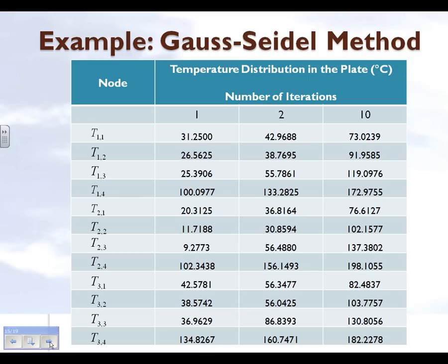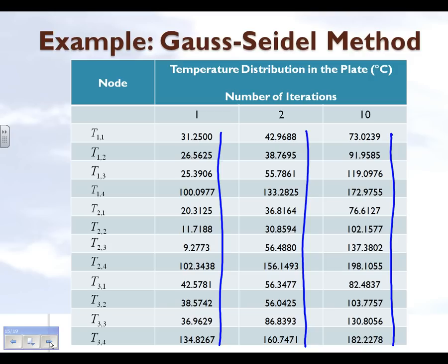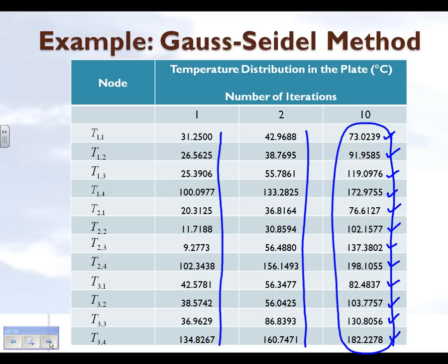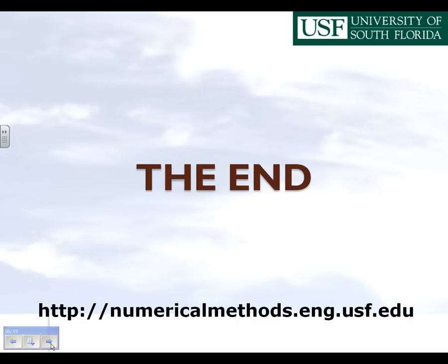We have summarized the temperatures from the first iteration, the second iteration, and the results at the end of the tenth iteration. The results at the end of the tenth iteration are within one percent of the pre-specified tolerance — comparing all twelve nodes with their values from the ninth iteration, the absolute relative approximate error for all twelve nodes was less than one percent. So if one percent pre-specified tolerance is acceptable, we can accept the tenth iteration results as the steady-state temperature distribution in the plate. That's how the Gauss-Seidel method works, and that's the end of this segment.